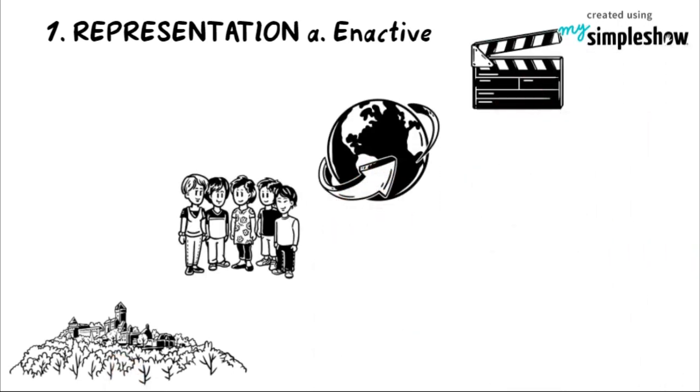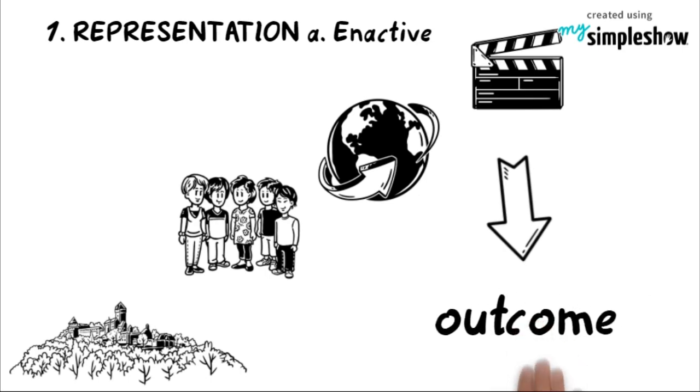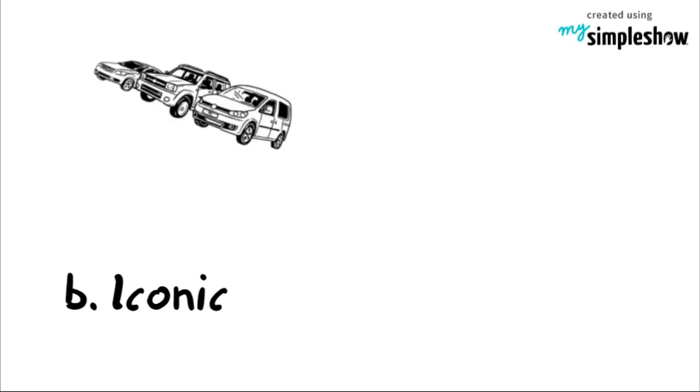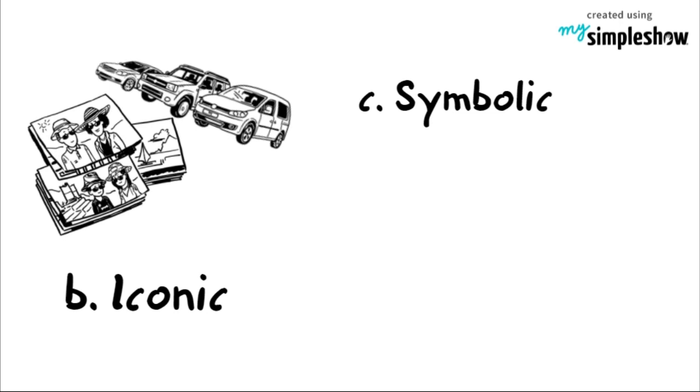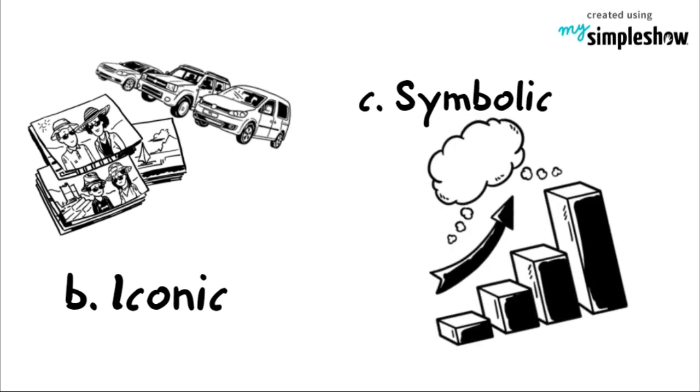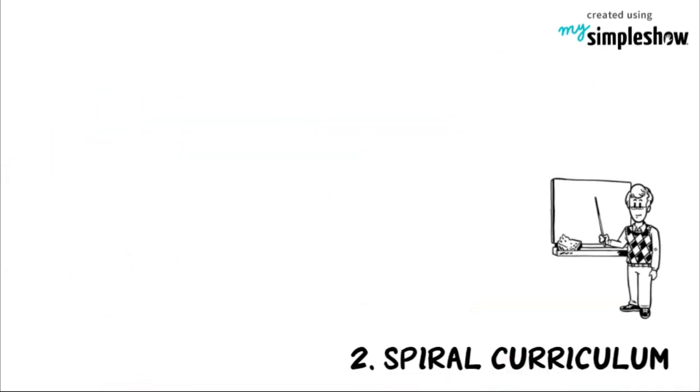The second representation is iconic. Learning can be obtained through using models and pictures. Third is symbolic. The learner has developed ability to think in abstract terms. The second main concept is spiral curriculum.